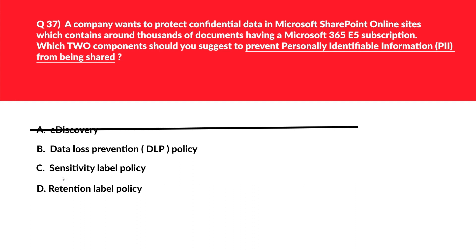Option C — sensitivity level policy — is used to classify, protect, and monitor sensitive data within SharePoint Online. It can automatically label content based on specific conditions and apply restrictions on how content can be accessed or shared, helping prevent confidential information from being shared outside the organization. This is also a potential answer. The question is looking for two answers, so we'll park both B and C.